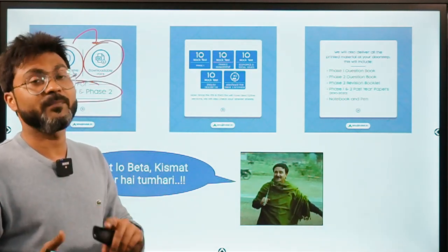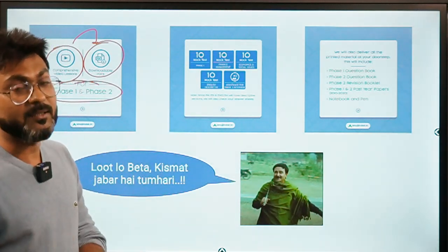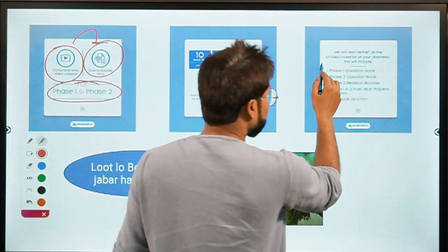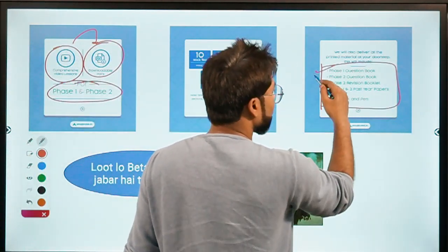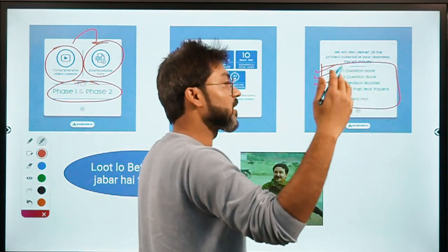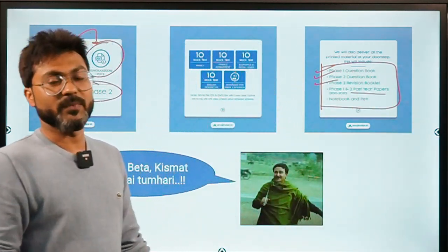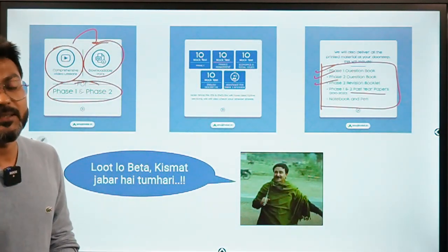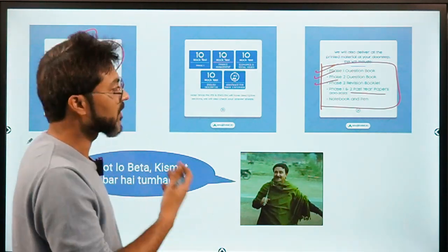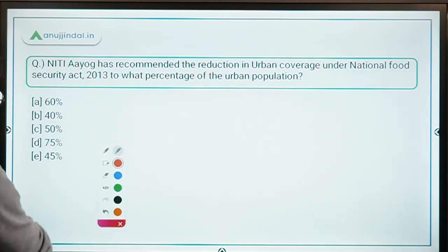All your answer sheets of FM, ESI, and English will be checked by the faculty. You will also get a kit that includes the Phase 1 question book, Phase 2 question book, Phase 2 revision booklet, and Phase 1 and 2 past year papers. Do visit anujindal.in to buy this course. Let's begin with the first question.